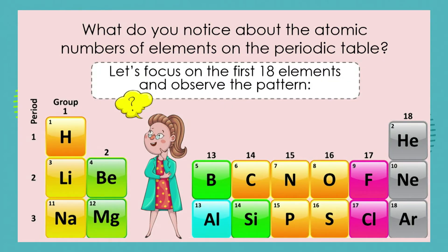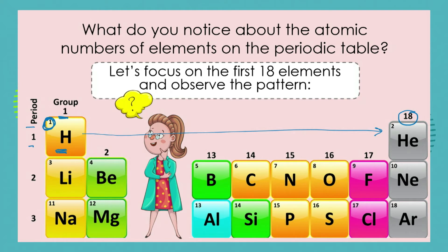What do you notice about the atomic numbers of elements on the periodic table? We're focusing on the first 18, so let's see what that pattern is. We start in period one, group one, with the very first element called hydrogen, and we see that its atomic number is one. If we go across the period to the second element in group 18, we see that helium has an atomic number of two.